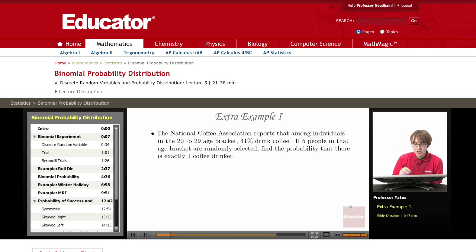Our first example, the National Coffee Association reports that among individuals in the 20 to 29 age bracket, 41% drink coffee. If five people in that age bracket are randomly selected, find the probability that there is exactly one coffee drinker.